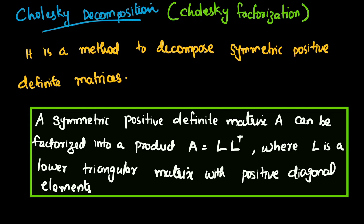L is a lower triangular matrix with positive diagonal elements. Since L is lower triangular, L-transpose is an upper triangular matrix. Cholesky decomposition says that a matrix A can be decomposed as L times L-transpose, and L is called the Cholesky factor or Cholesky element.